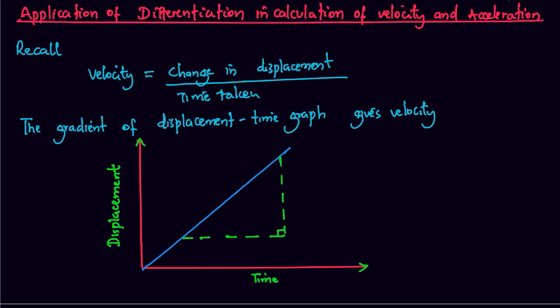We now want to get into the applications of differentiation in the calculation of velocity and acceleration. We recall that velocity is equal to change in displacement over time taken for the change to take place. So when we are given a displacement-time graph, the gradient by definition gives us the velocity. For the displacement-time graph, change in displacement delta s over change in time delta t is equal to velocity by definition.